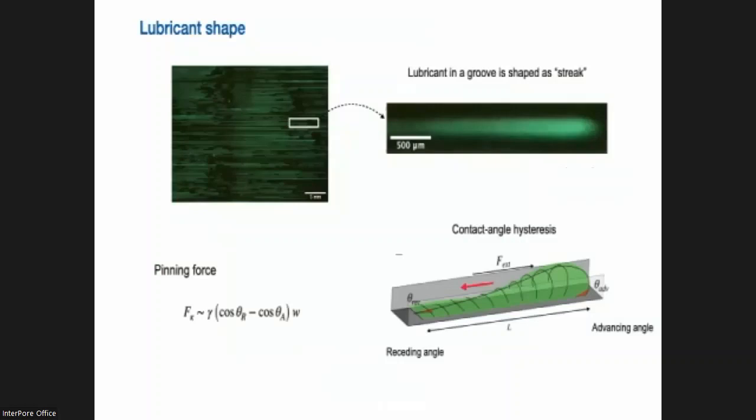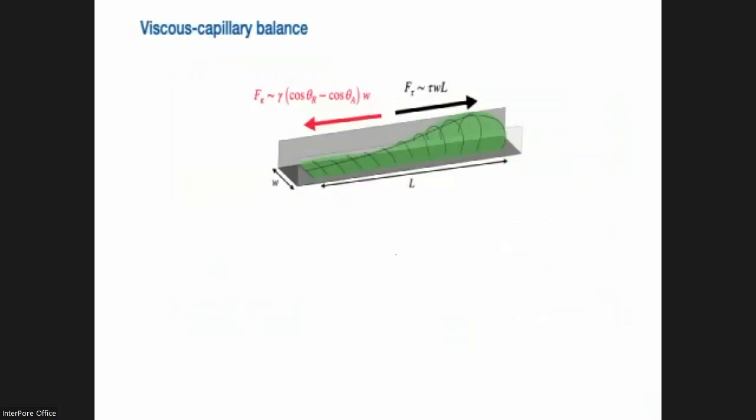And we also can define a pinning force, which is related to the contact angle hysteresis, the difference between the advancing and receding contact angle, multiplied by the surface tension and the width of the droplet. This is a pinning force. This is a force that resists the shear stress. So we can create a force balance here where we have the shear stress pushing the lubricant to the right. And this is then resisted by the pinning force.